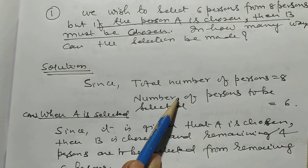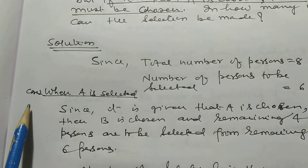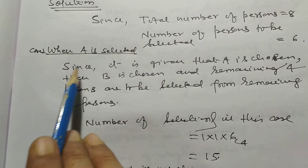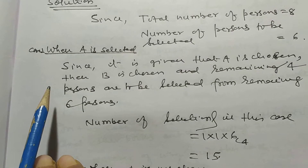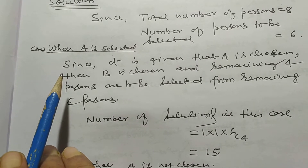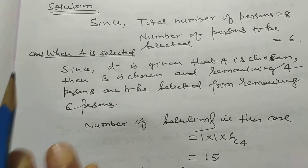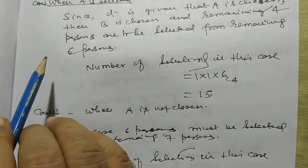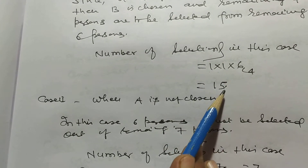Total number of persons is 8, and we need to select 6. In the first case, when A is selected, the condition is that B must also be chosen. So both A and B are fixed, and we select the remaining 4 from the remaining 6 persons: 1×1×6C4 = 15.